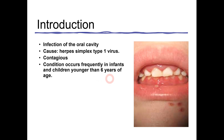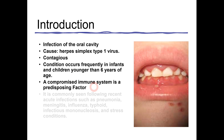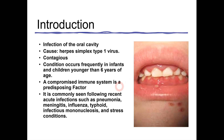There are certain systemic conditions which increase the chances of developing this condition. The most common predisposing factor is a compromised immune system. This condition is often experienced in patients who have had recent episodes of pneumonia, meningitis, influenza, typhoid, infectious mononucleosis, and stress conditions. After experiencing any one of these conditions, patients do tend to develop acute herpetic gingivostomatitis.